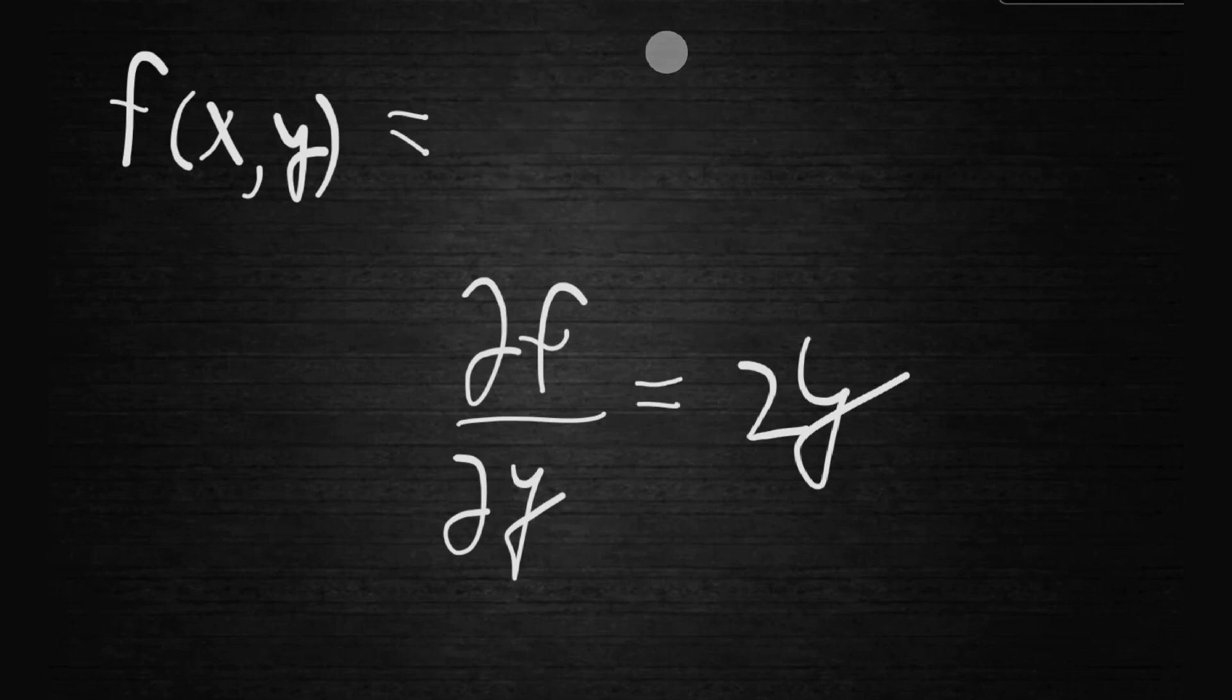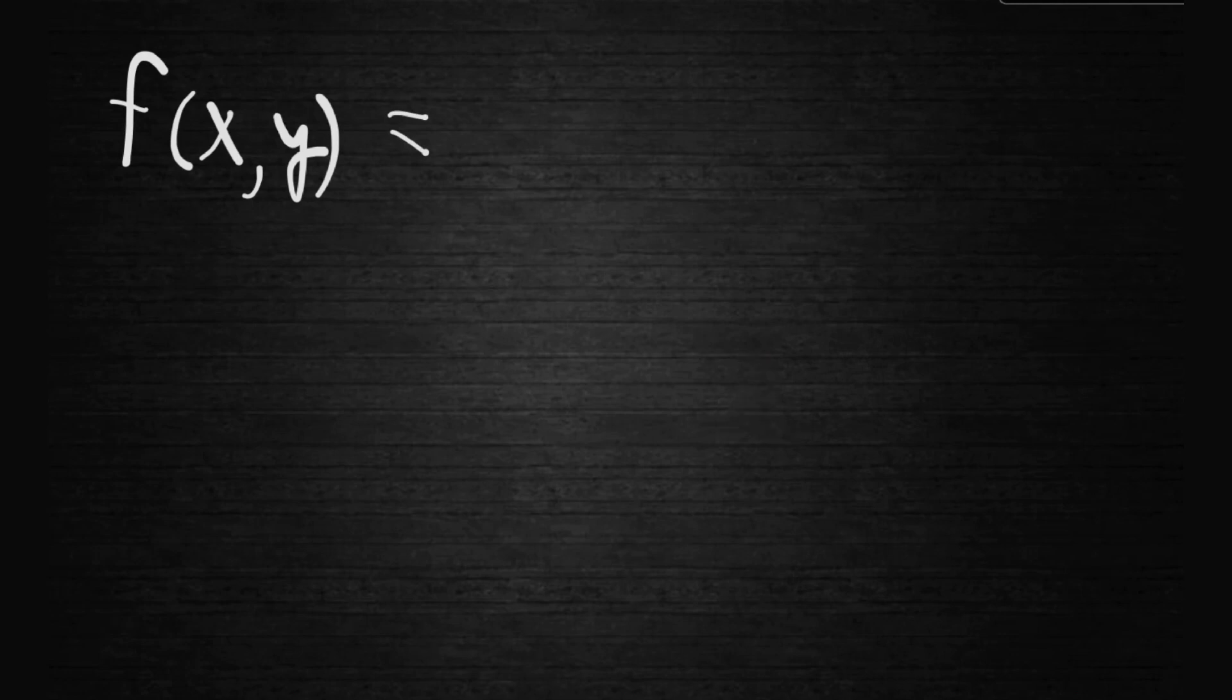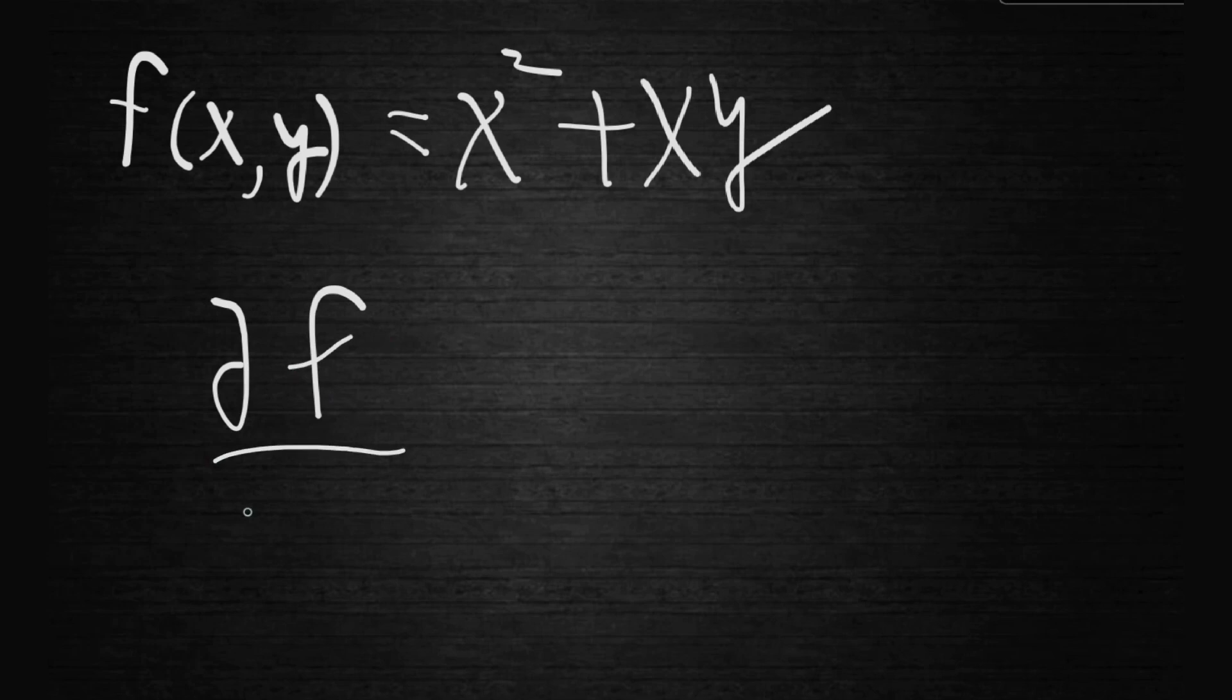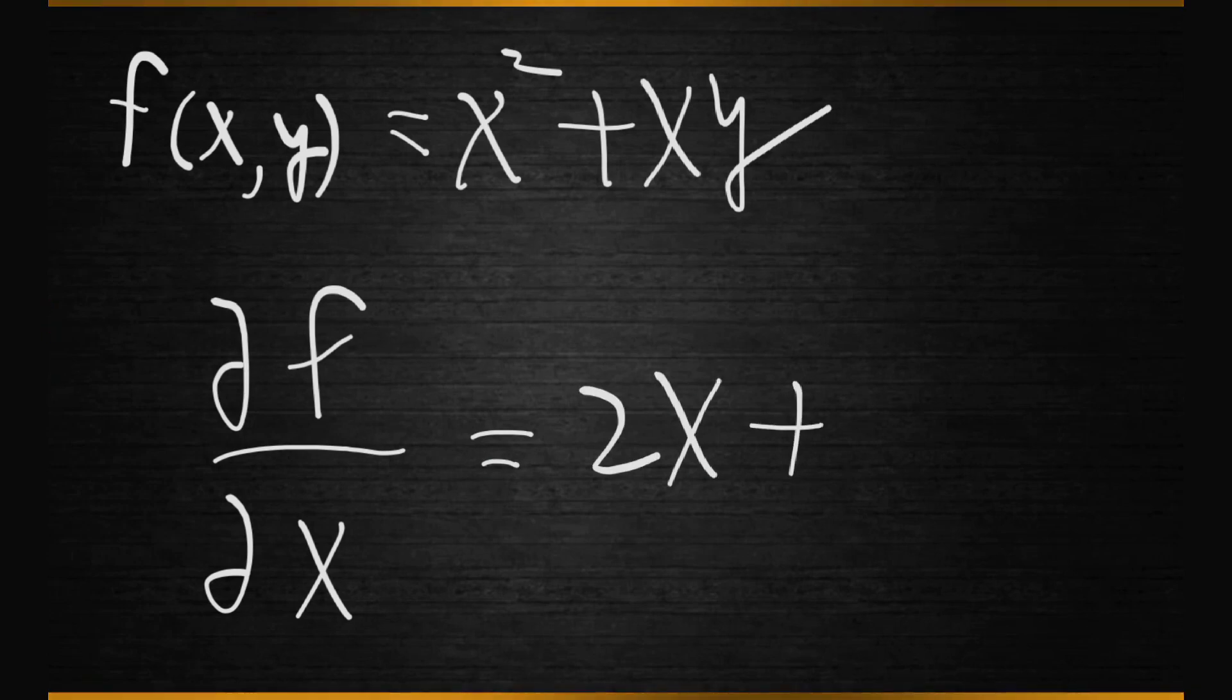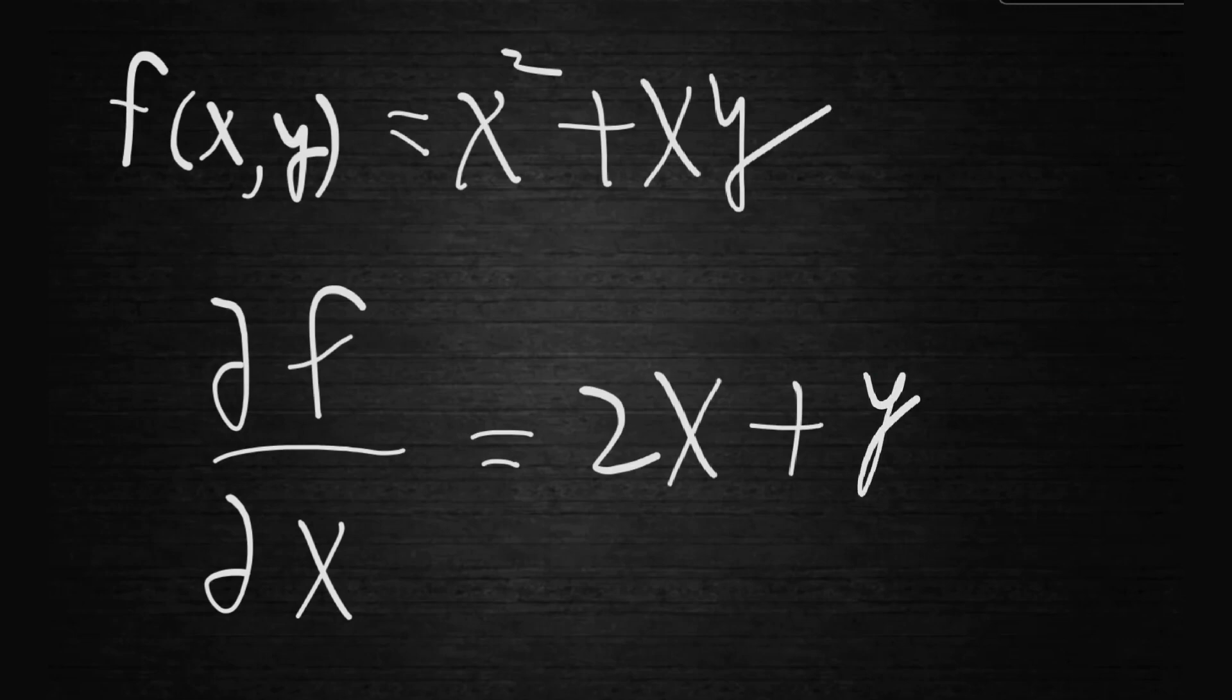Another quick example is let's say we have a different function that is f(x,y) equals x squared plus xy. We could say it like this and what we would get to calculate a partial derivative of f with respect to x. We could simply treat y as a constant and this gives us the following equation.